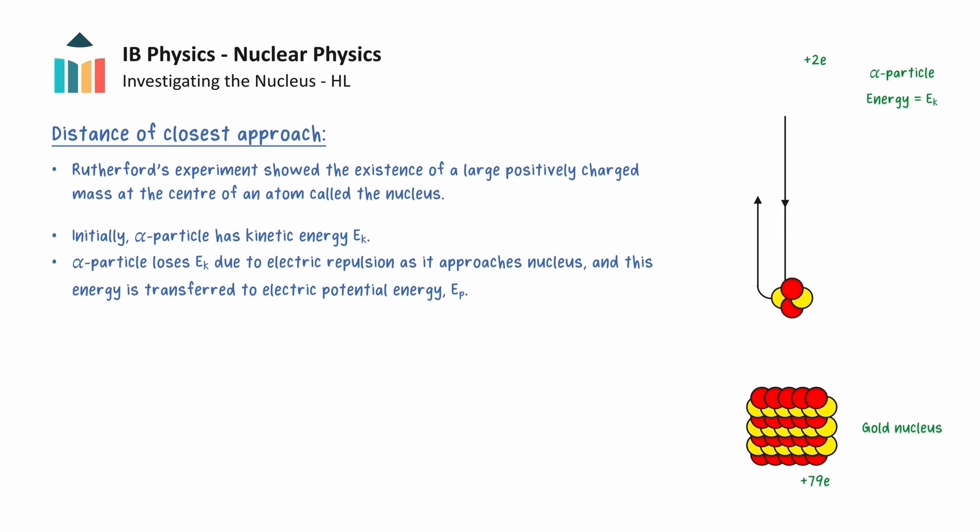At the point of closest approach, at a distance d from the centre of the nucleus, the alpha particle will be stationary, and the total energy will be electric potential energy. We can now equate the initial kinetic energy of the alpha particle to the electric potential energy which is given by the following formula.